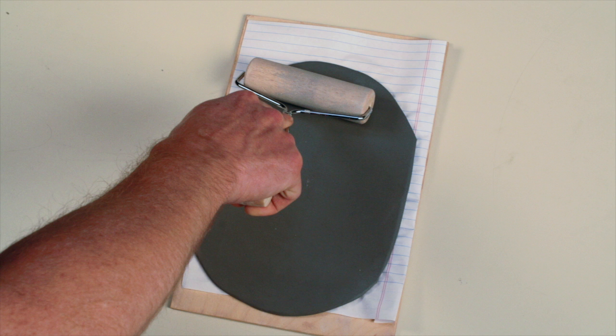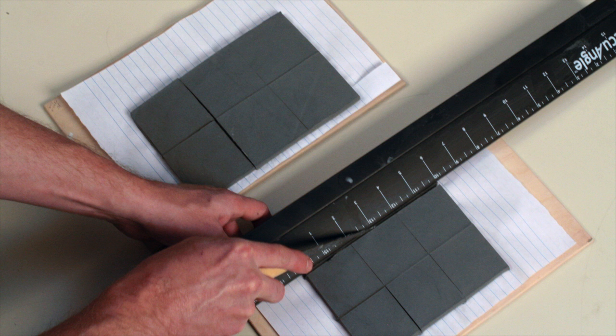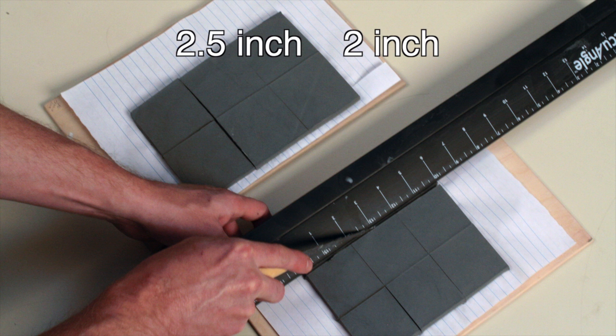Next, roll out several slabs the same thickness as the extruded tubes and proceed to smooth them out. Once the slabs are leather hard, cut them into 2-inch squares and 2-1⁄2-inch squares.